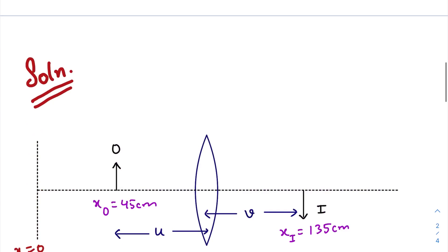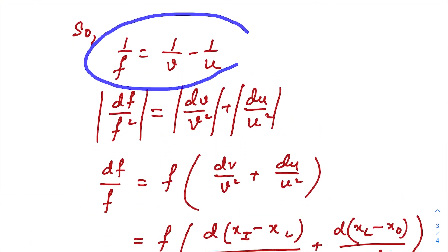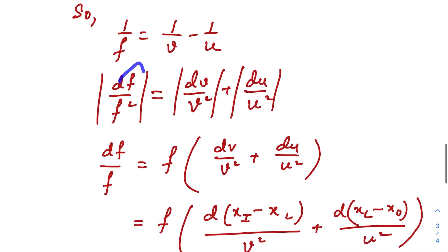So this is our principal formula. For finding out the error, we need to just differentiate both sides. So we get df by f equals dv by v square plus du by u square.